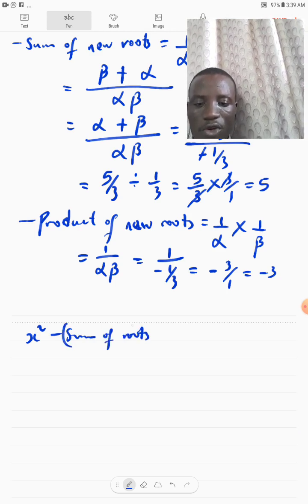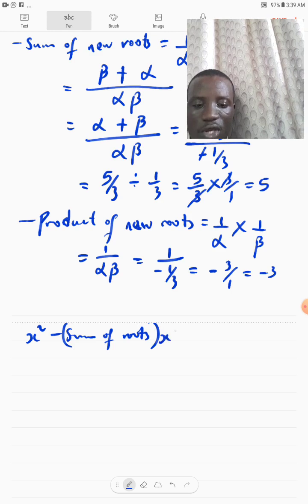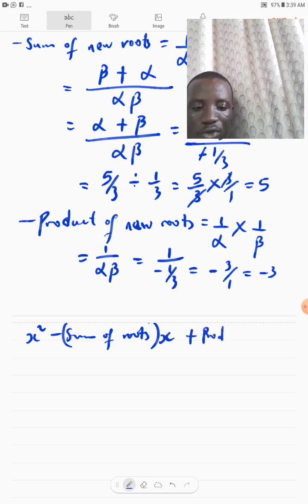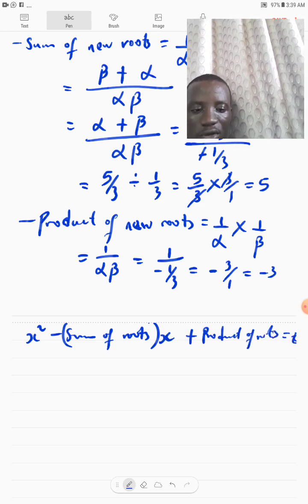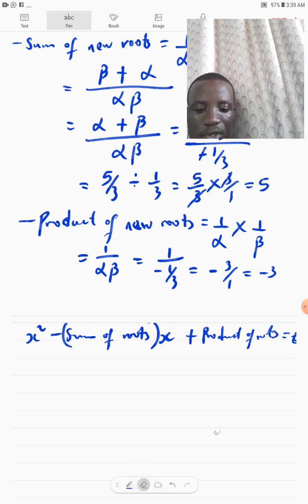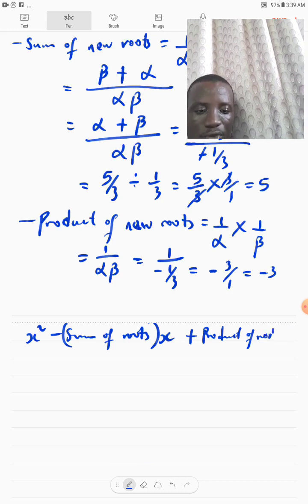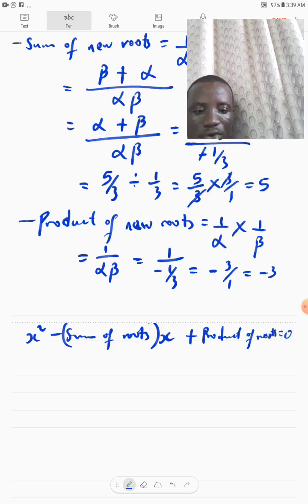So, our new quadratic equation will be X squared minus sum of roots. Okay. Of course, the new sum of the new roots. X plus product of roots. Product of roots. Okay. So, you know that's why I've written it. It was 0. Okay. Let me do that. Product of roots. It was 0.